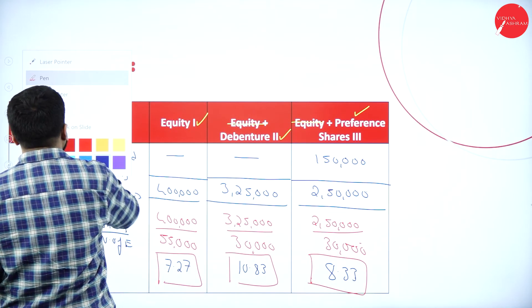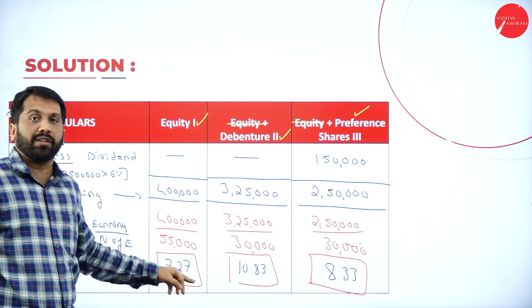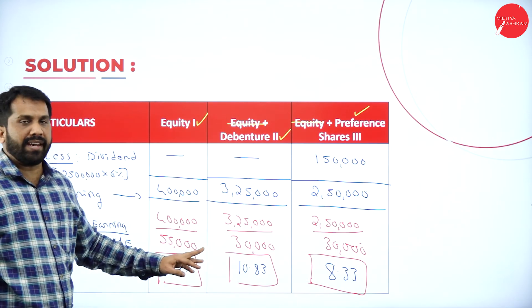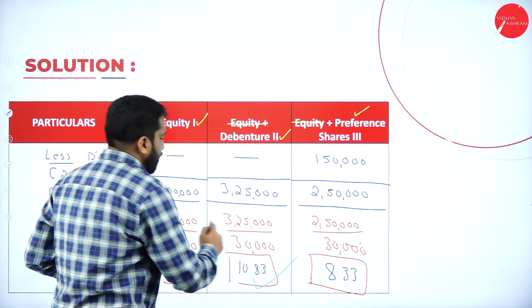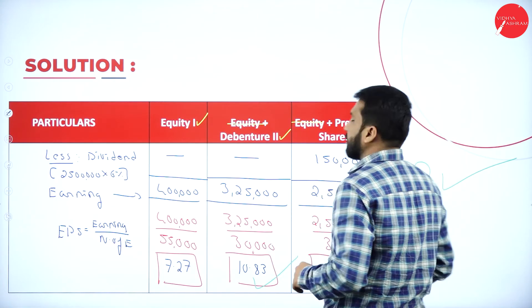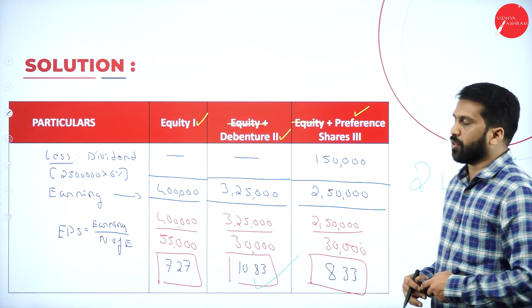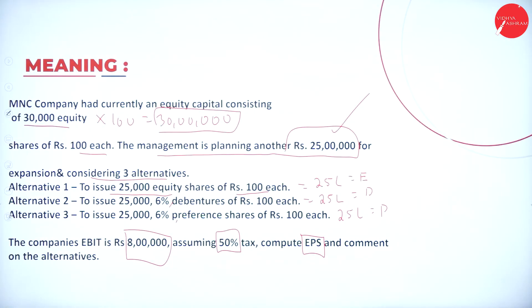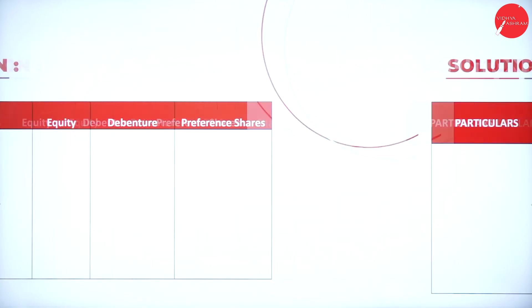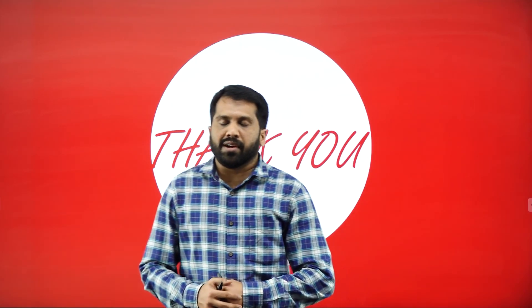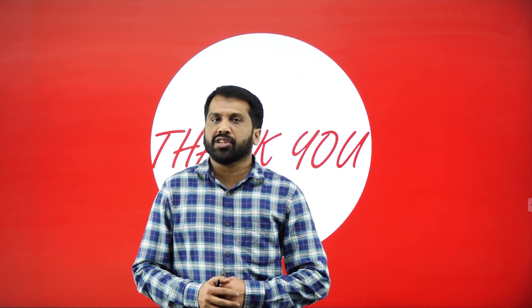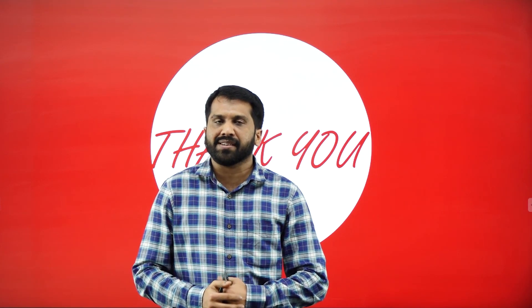So which option is better? Option one gives EPS of 7.27, Option two gives 10.83, and Option three gives 8.33. Option two — debenture — has to be accepted because the earning per share is highest at 10.83. Please take a screenshot of all the slides. This is all about today's session on capital structure. Please work out the same problem at home — you will understand better. Thank you.